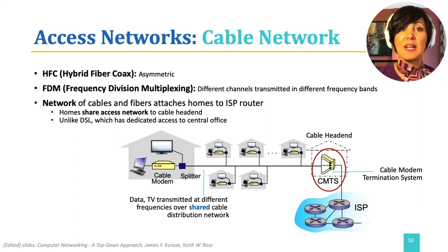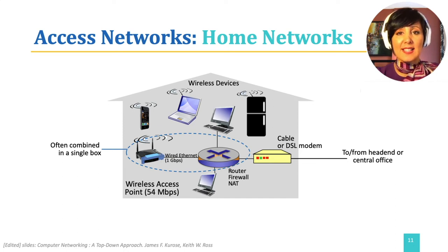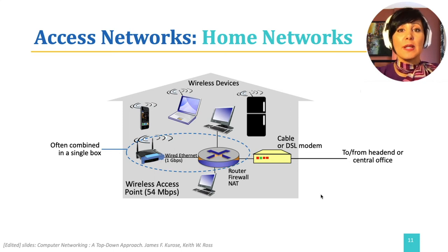Data sent by the home travels on the upstream channel to the headend. DSL and cable are still the most prevalent types of broadband residential access, with fiber-to-home gaining more popularity. These technologies bring the connection to the home. Within a home, a local area network, LAN, is used to connect an end system to the edge router. Ethernet and Wi-Fi, most commonly Wi-Fi, are the technologies used for this access.